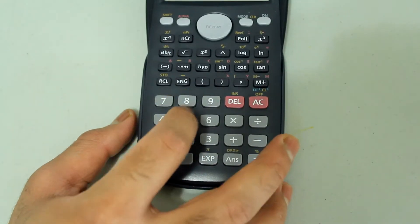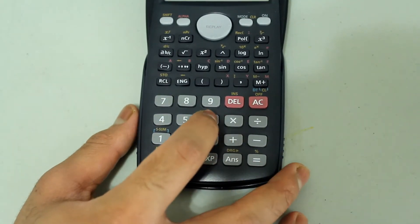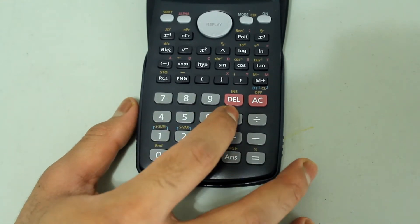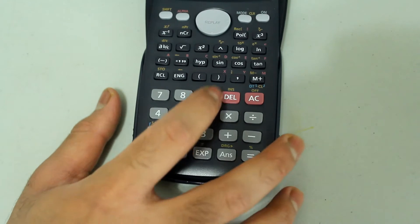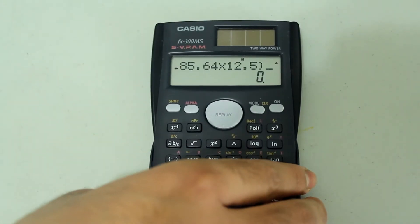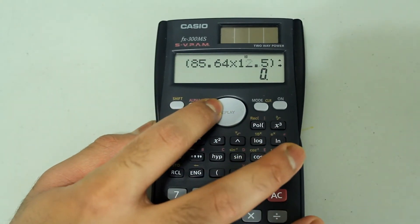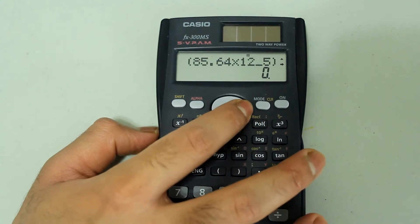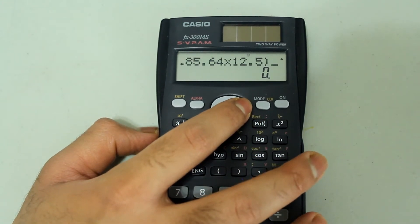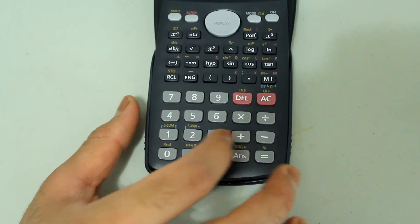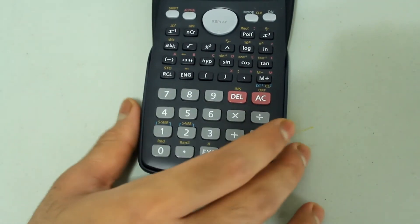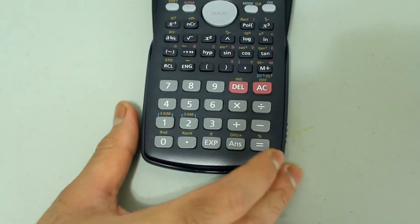Open parenthesis, 85.64 times 12.5, close the parenthesis. This is what I have so far. So, open parenthesis, 85.64, and then 12.5. To that, I'm going to add 17 and then press equals.